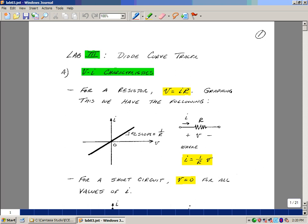Lab number three is entitled Diode Curve Tracer. In this lab, we're going to plot the voltage versus current characteristics of a variety of devices.